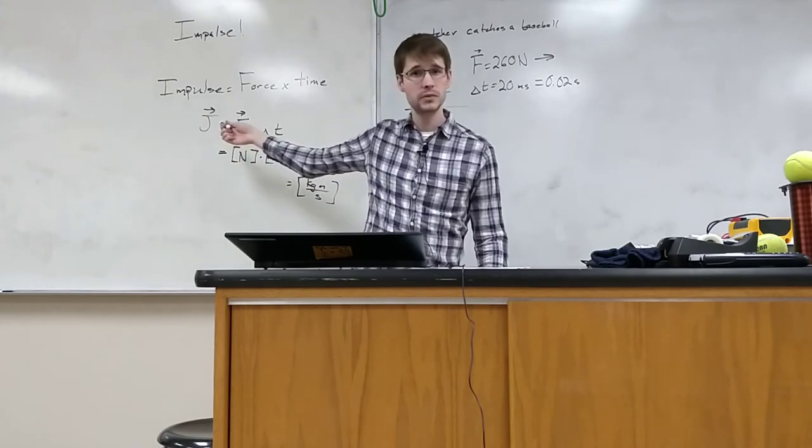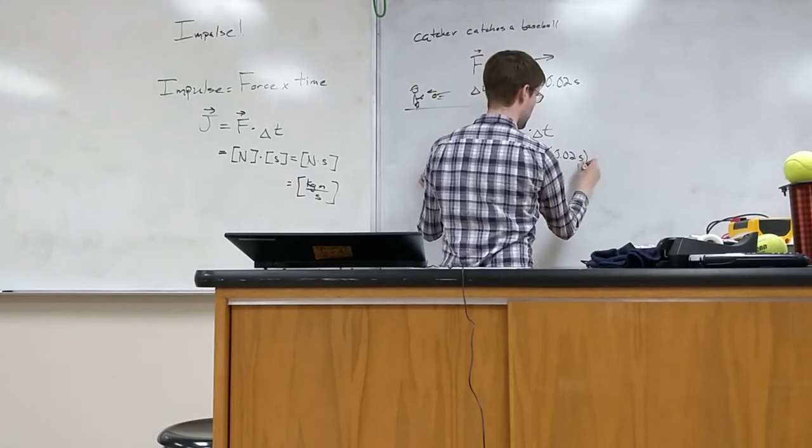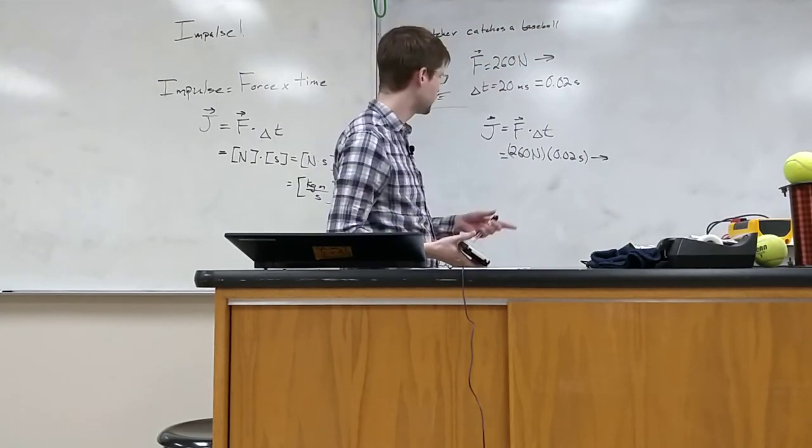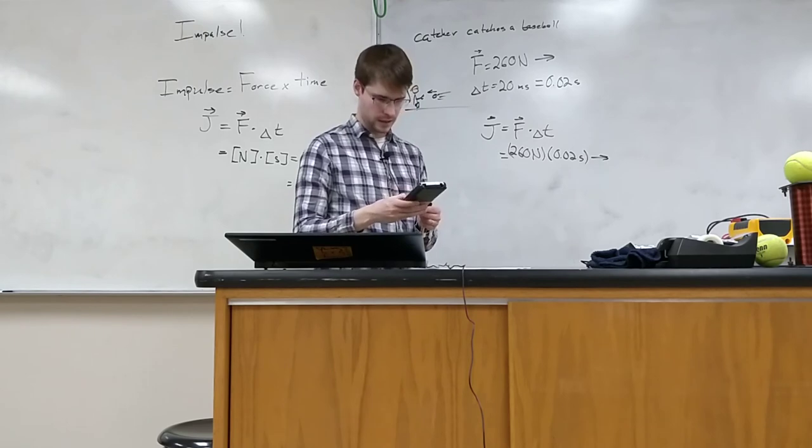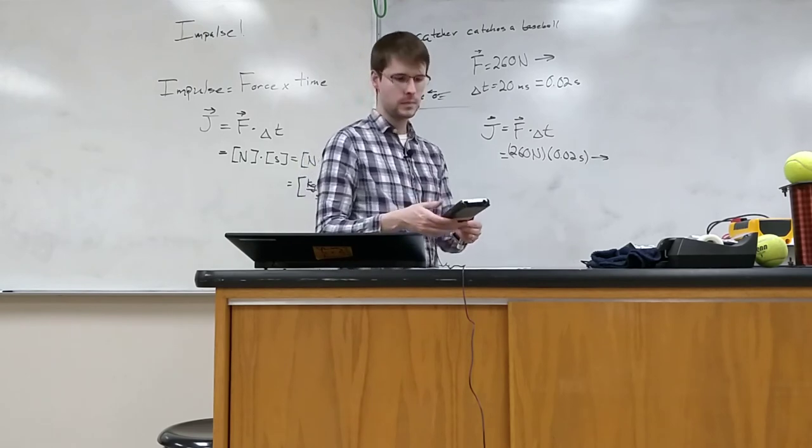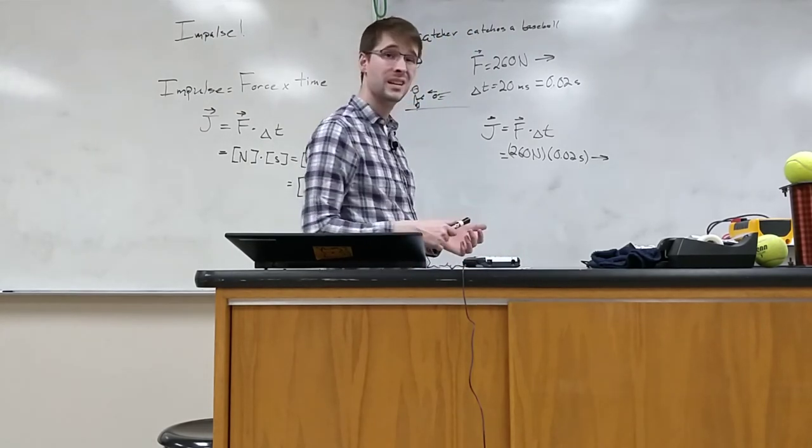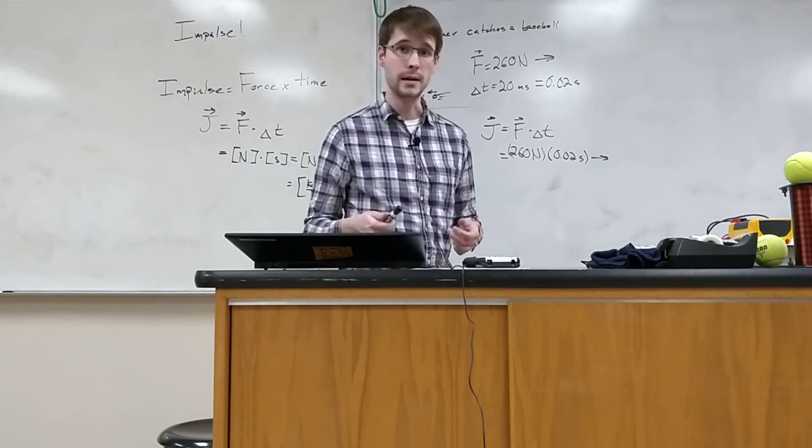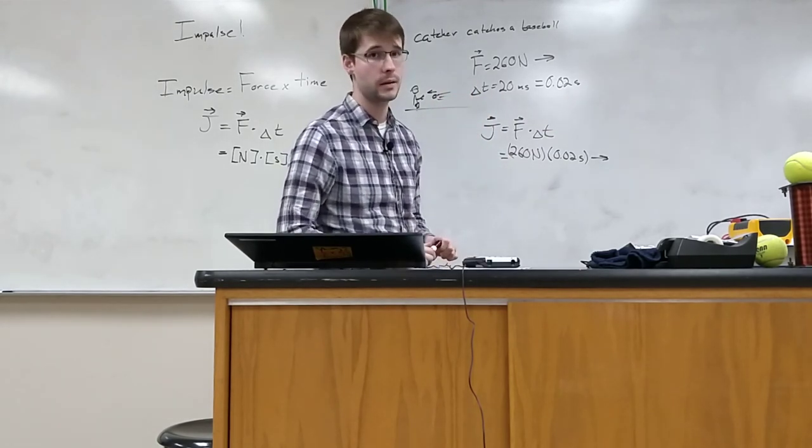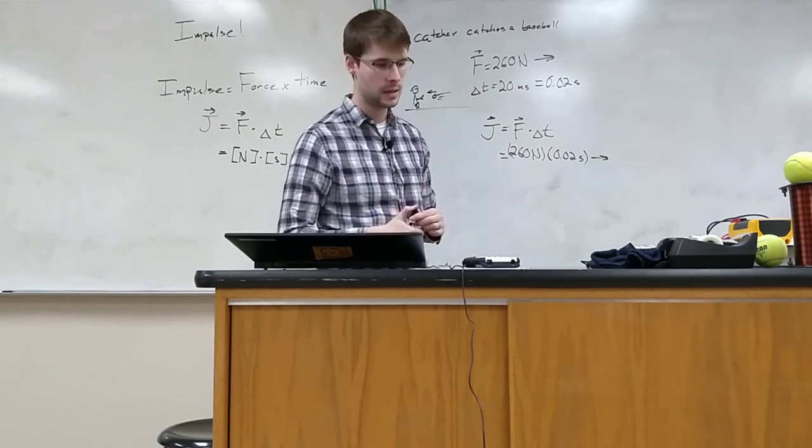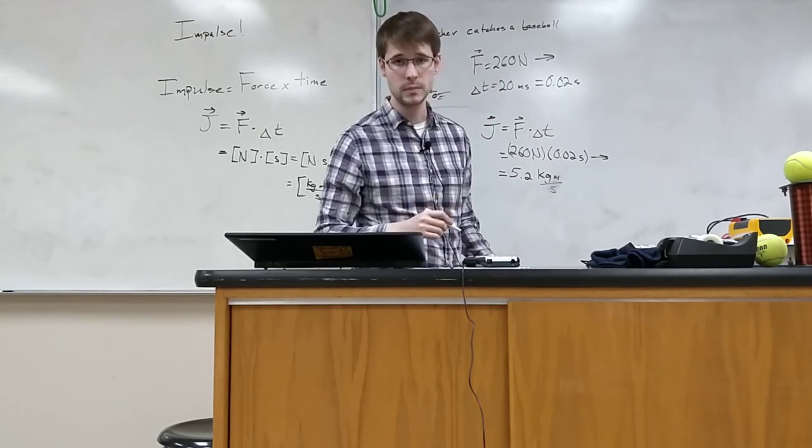To figure out the impulse, or jimpulse, all we do is use that equation. We get 260 times 0.02, which is 5.2 newton seconds to the right, or 5.2 kilogram meters per second to the right. Remember, impulse is a vector, so we've got to include that direction. Otherwise we're not doing it right. If it asks for the magnitude, that would be just the number. But here, 5.2 kilogram meters per second to the right.